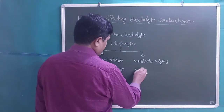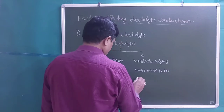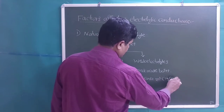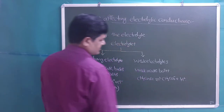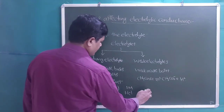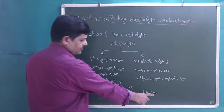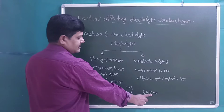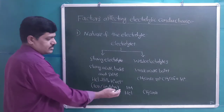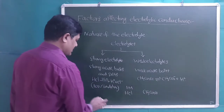Weak electrolytes are weak acids and weak bases, which attain equilibrium with their ions in the aqueous state — complete ionization does not occur. For example, if we take the same concentration — 1 molar HCl and 1 molar acetic acid — 1 molar HCl has a maximum number of ions compared with 1 molar acetic acid.